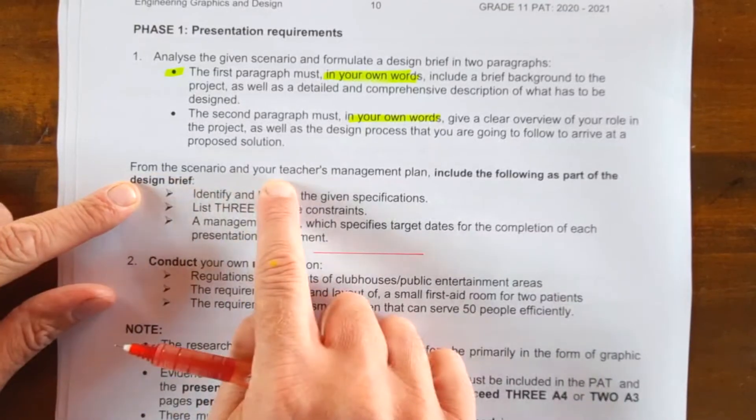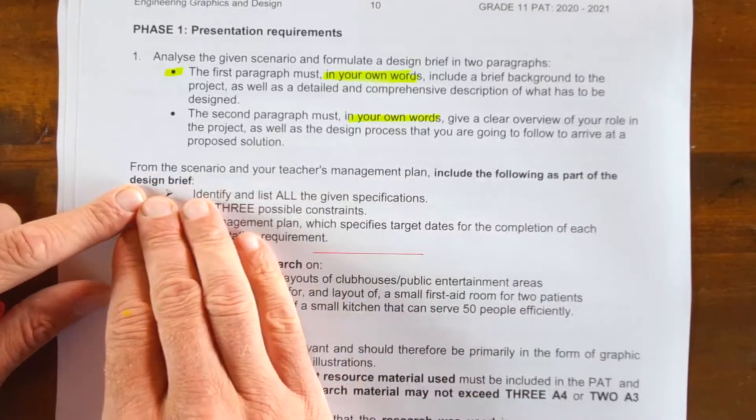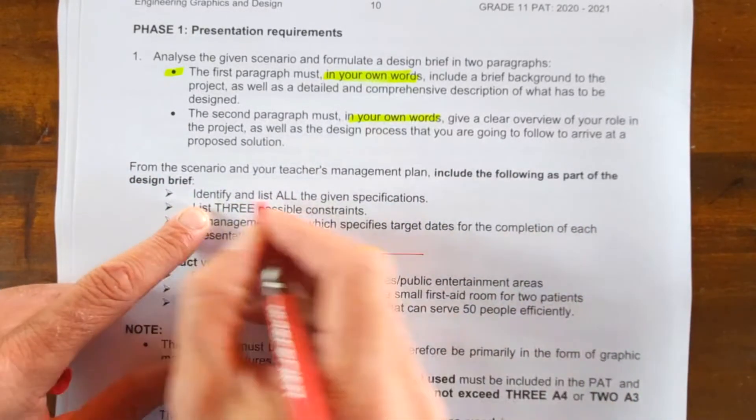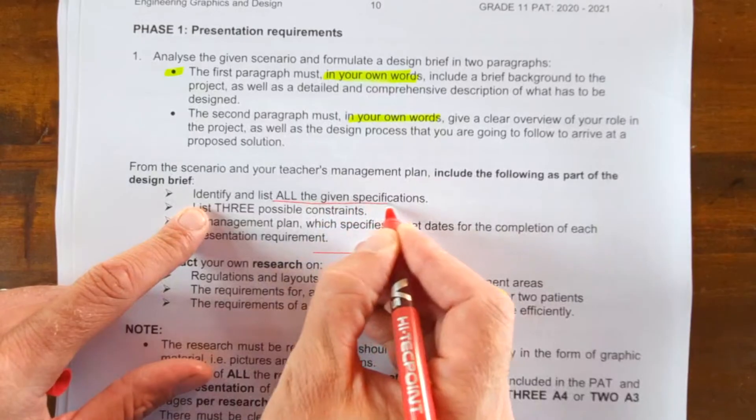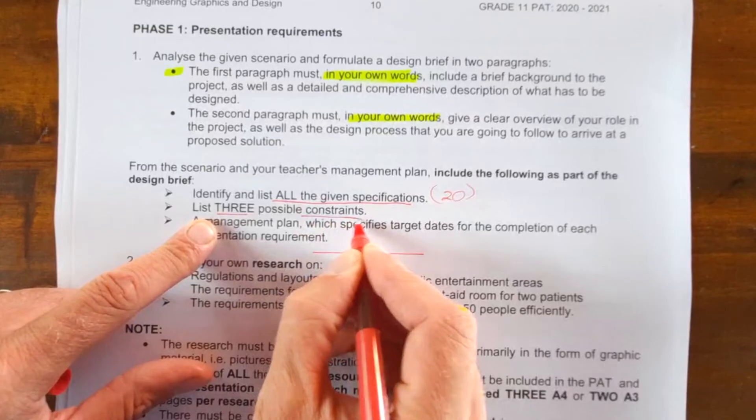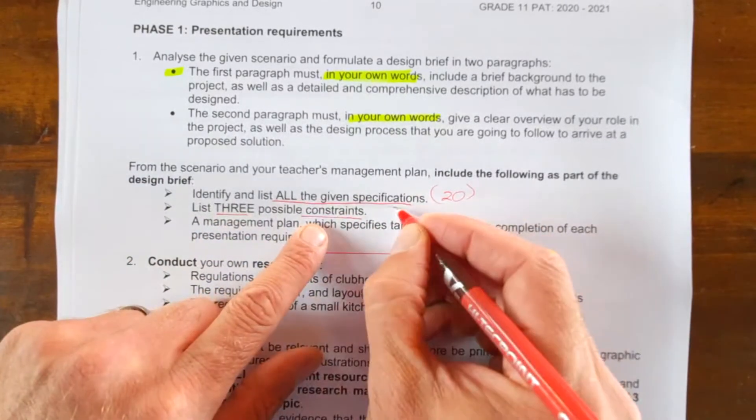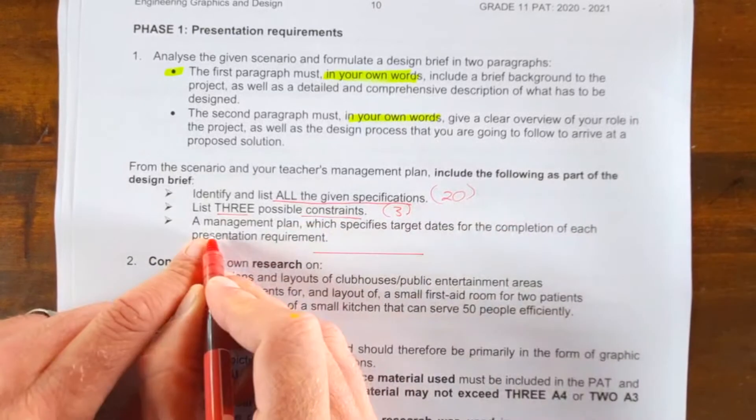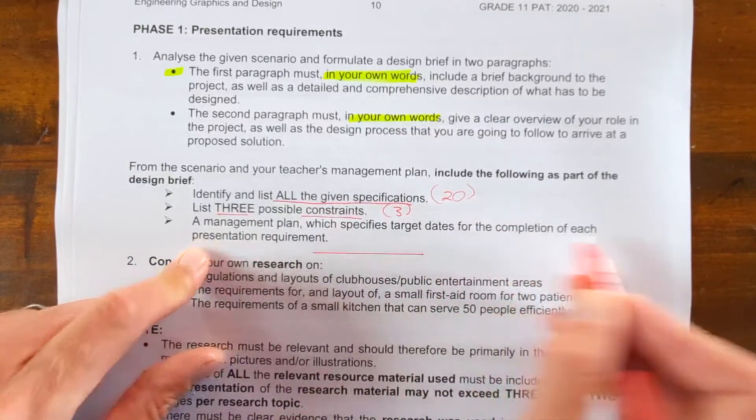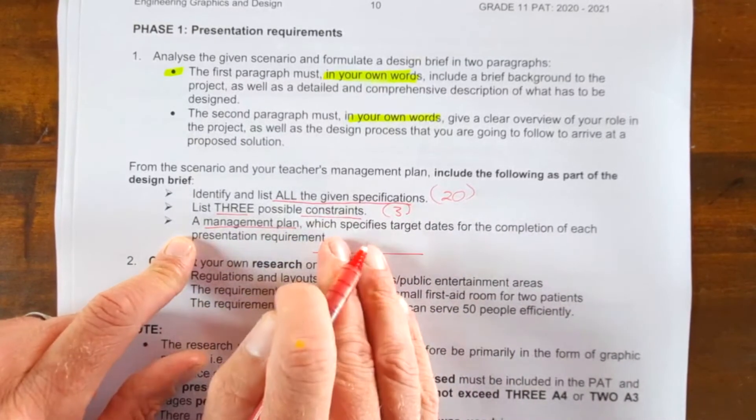So from this scenario, your teacher's management plan, include the following as part of the design brief. On this page, it's one page. Identify all the given specifications—there's going to be at least 20 here. List three possible constraints, that's things that are hindering you, restrictions on you. You're going to have three there. Then you're going to have to come up with a management plan which specifies target dates for the completion of each presentation requirement. I'm going to show you an example of how this management plan looks like.